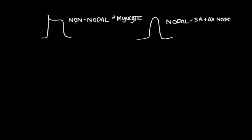Let's talk about the non-nodal action potential first. In phase 0, we have rapid depolarization, and this is because we have an opening of sodium channels. Sodium channels open, sodium pours into the cell, and you get this rapid spike in voltage. At some point, these sodium channels close.